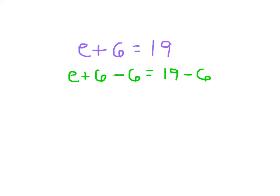E plus 6 minus 6 will just leave us with E. I'll show you the work for that. And 19 minus 6 is 13. So that E equals 13. I'll box that.